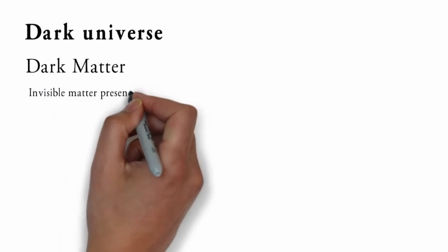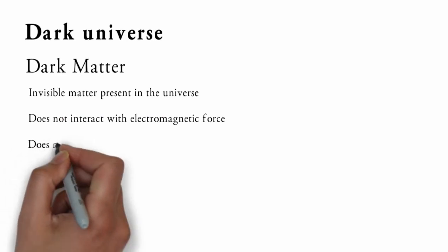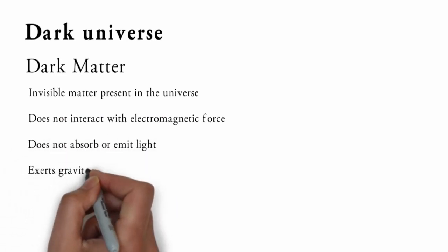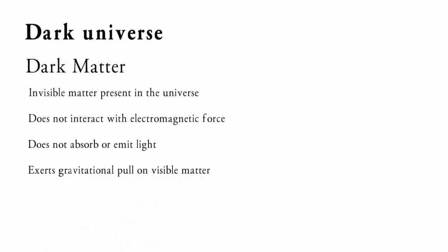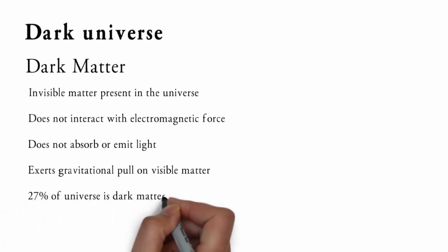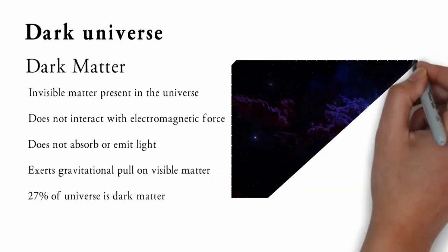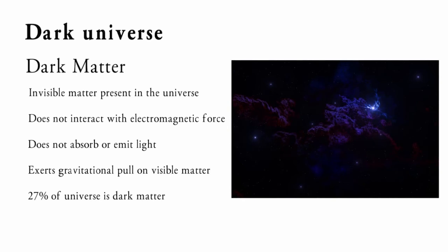Dark matter is an invisible matter present in the universe which does not interact with the electromagnetic force. It does not absorb or emit light, therefore nobody can see dark matter. Scientists have discovered dark matter on the basis of the gravitational effect it exerts on visible matter. According to scientists, 27% of the universe is comprised of dark matter, whereas the visible matter that we can observe, in the form of galaxies and stars, is only about 5% of the universe.